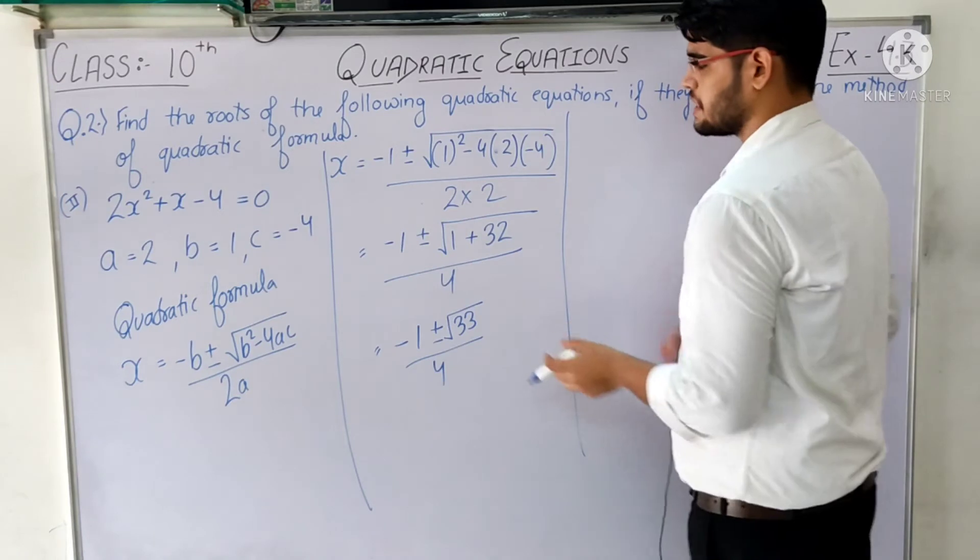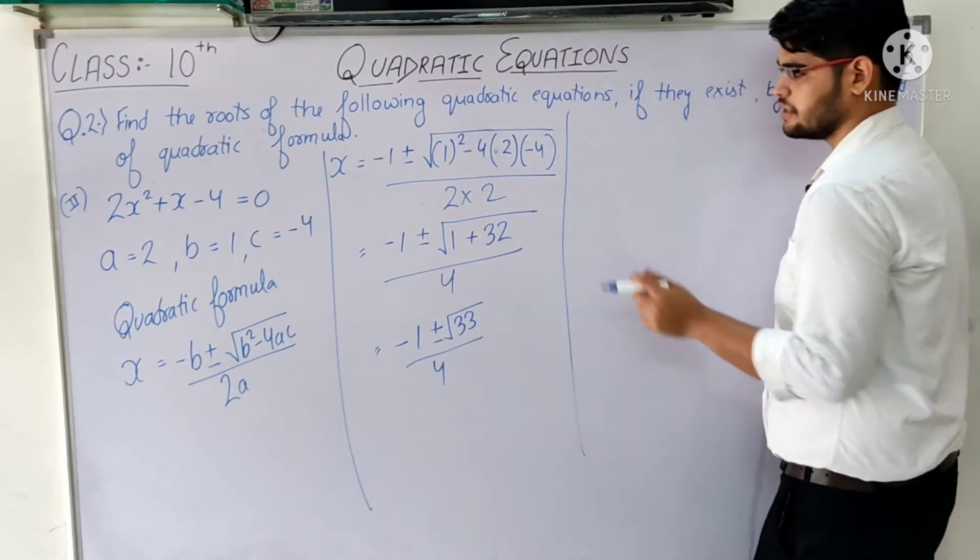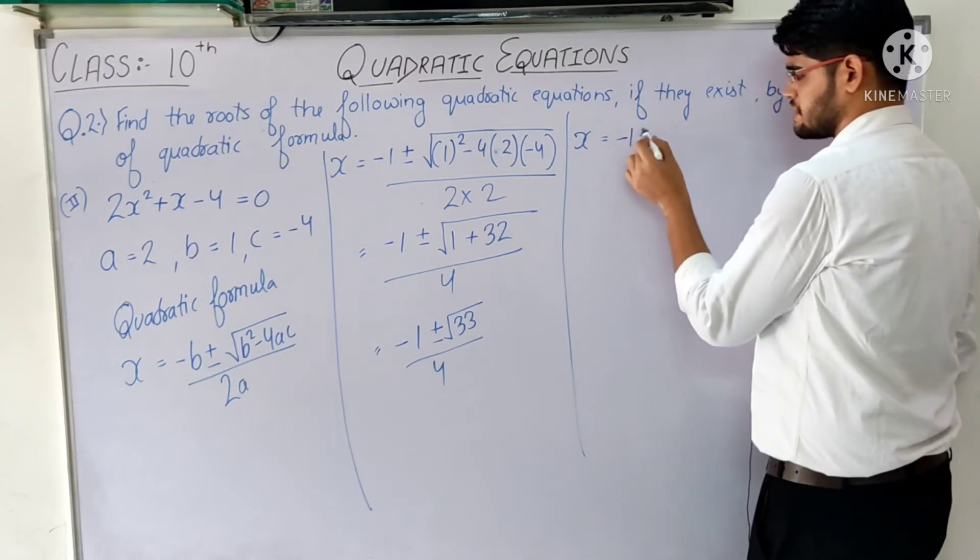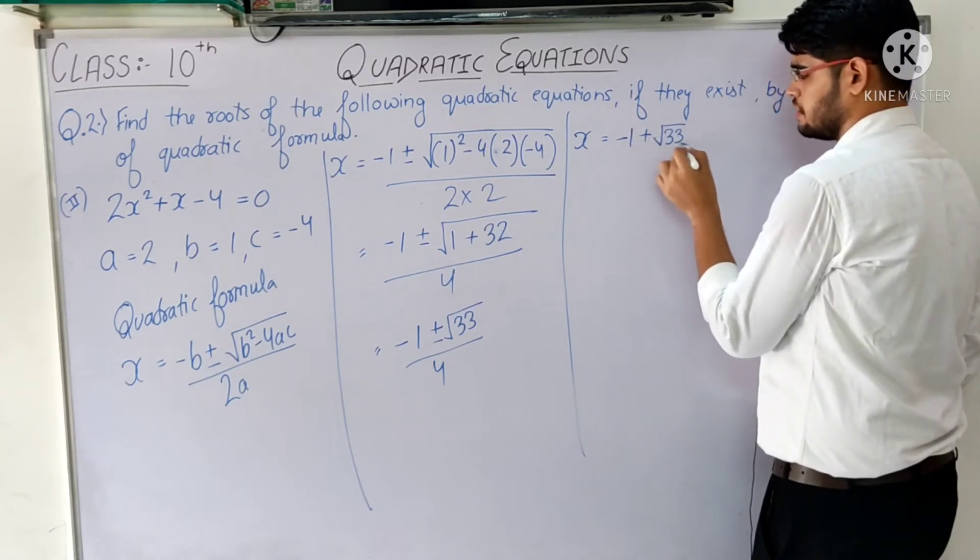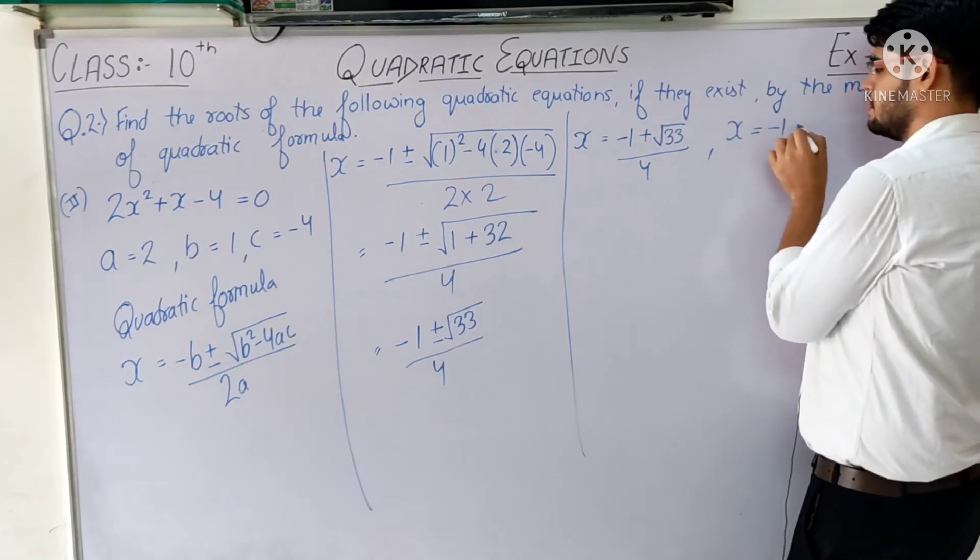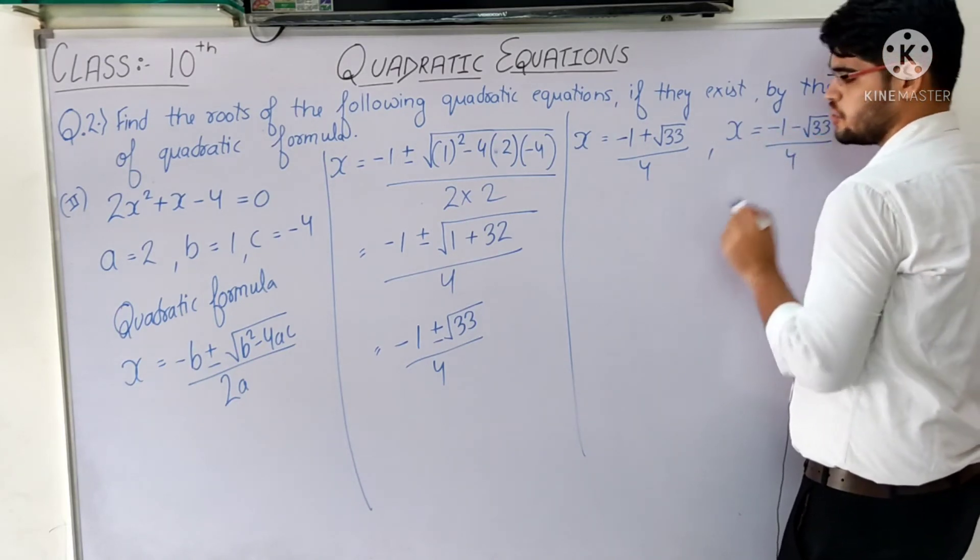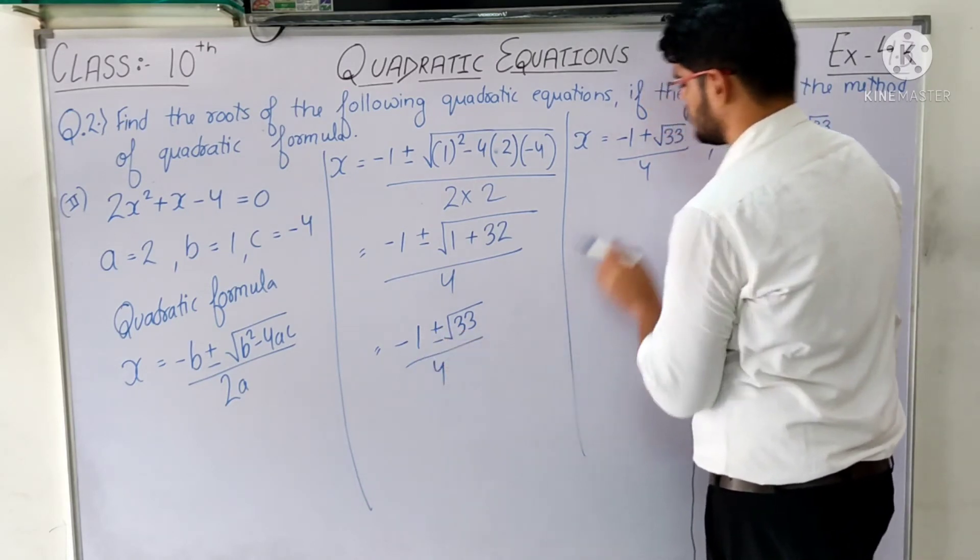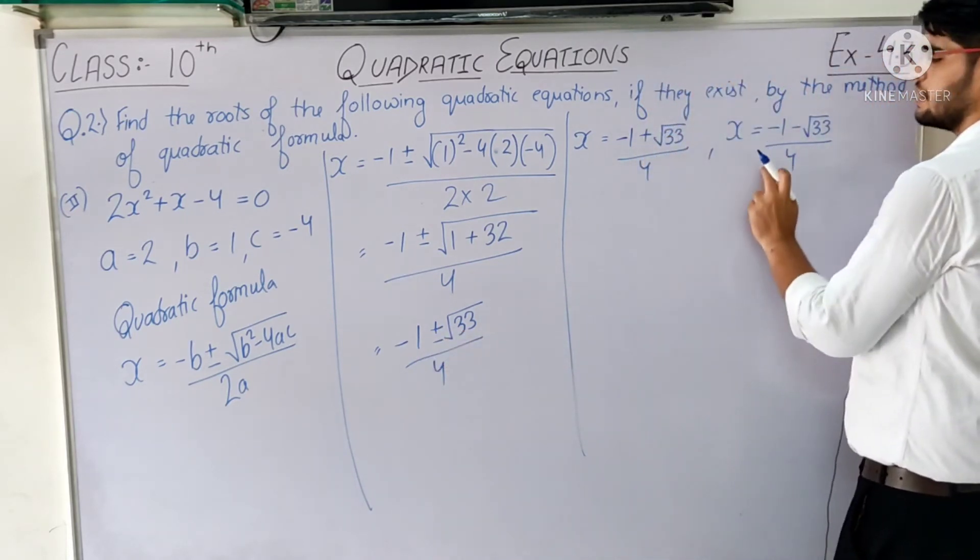Now to find the individual values of x, we split the plus-minus. One time we take the plus sign, giving x = (-1 + √33) / 4, and one time we take the minus sign, giving x = (-1 - √33) / 4.